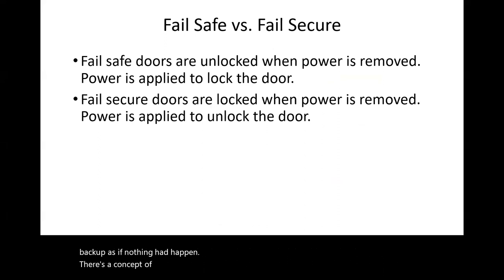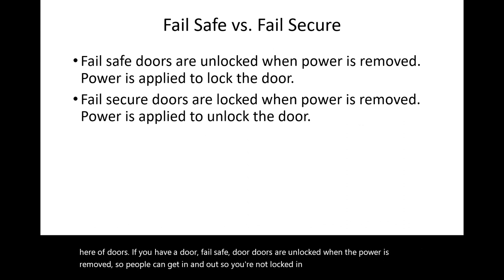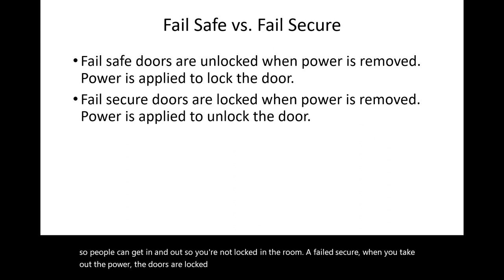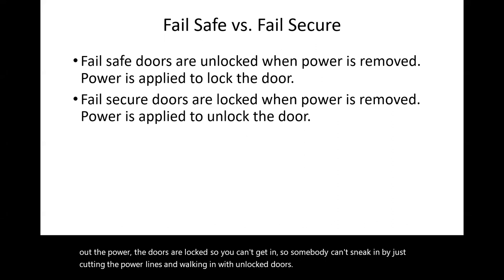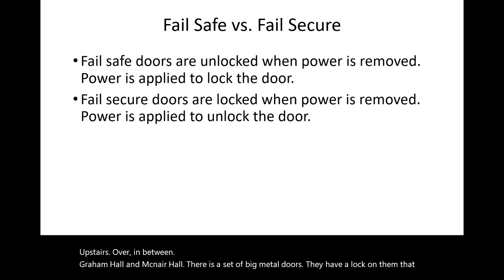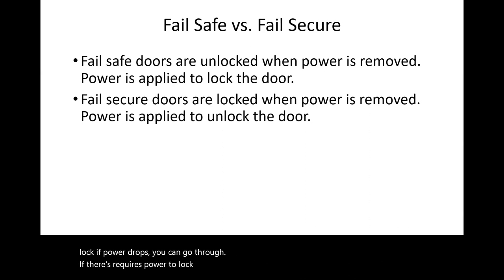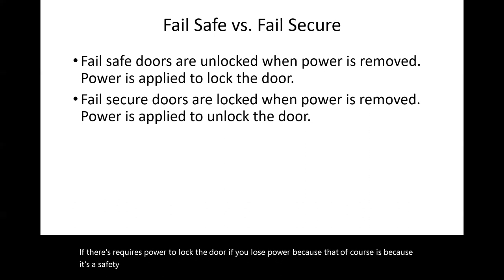Fail-safe and fail-secure are slightly different concepts. Fail-safe doors are unlocked when power is removed, so people can get out — you're not locked in a room. Fail-secure doors lock when power is removed, so attackers can't just cut power lines and walk in through unlocked doors. Here at A&T, the metal doors between Graham Hall and McNair Hall require power to stay locked — if you lose power, they unlock. This is a safety feature: if there's a fire that eats through power lines, you want to be able to get out.